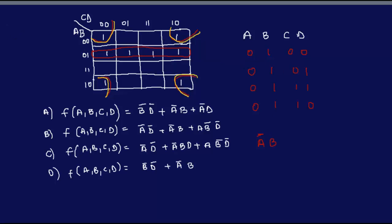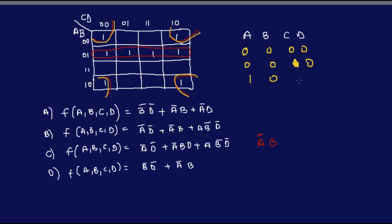Now I go to the yellow color and do the same thing. For the yellow group, I have a one here, a one here, a one here, a one here — they all count as one. So I have a one under ABCD: zero-zero-zero-zero; zero-zero-one-zero; one-zero-zero-zero; and one-zero-one-zero. So what does not change? B doesn't change — you can clearly see it. And D doesn't change. So since both are zero, I put a bar on B and a bar on D, giving me B-bar D-bar.